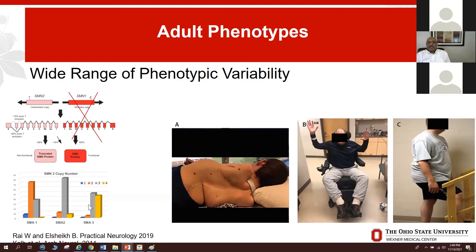Non-sitters tend to have contractual complications and are often ventilator dependent or require gastrostomy as well. They may have recurrent hospitalizations because of aspiration pneumonia and other infections. At the other end of the spectrum is a milder phenotype — adults who are still able to walk independently.